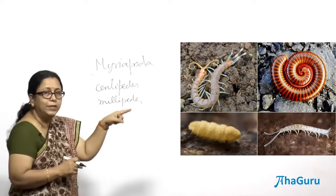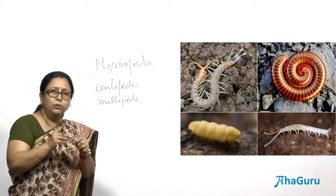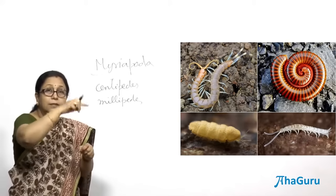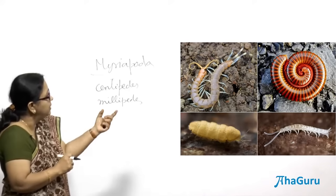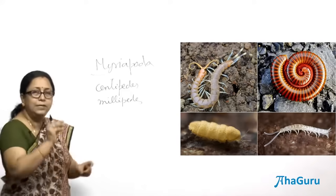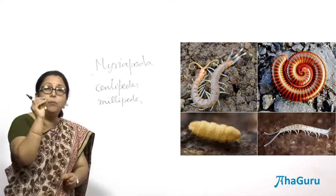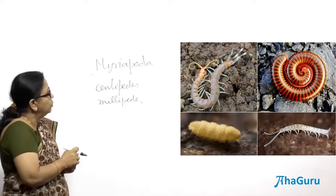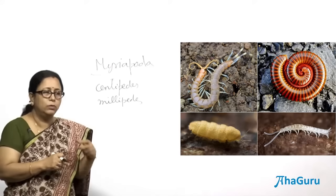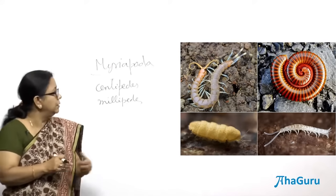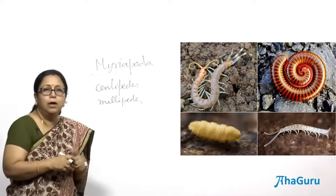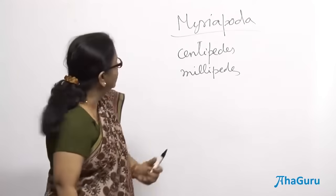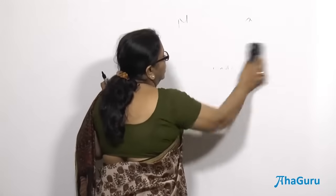Millipedes are commonly seen during the rainy season. When touched or irritated, they curl into a circle. Unlike centipedes which have a flat body, millipedes have a rounded body and two pairs of legs for every segment — that is why they are called millipedes. They are not predators like centipedes; they live on dead and decaying matter. This second group of worm-like arthropods has only one pair of antennae.